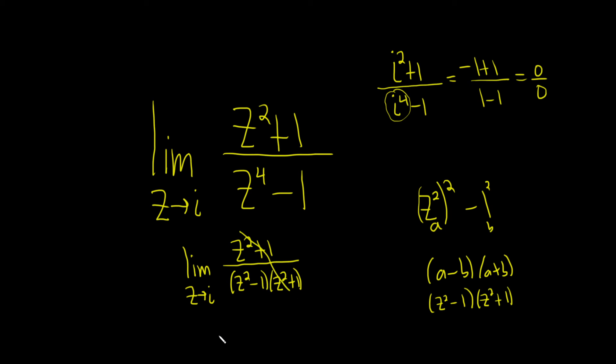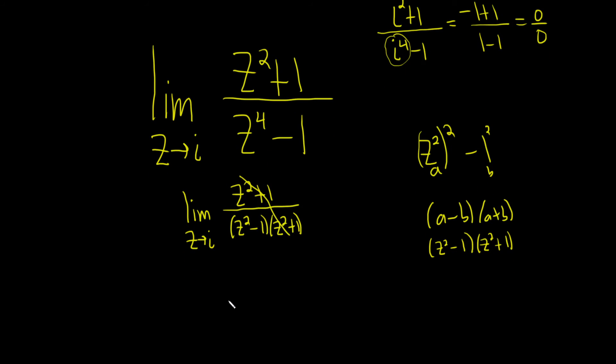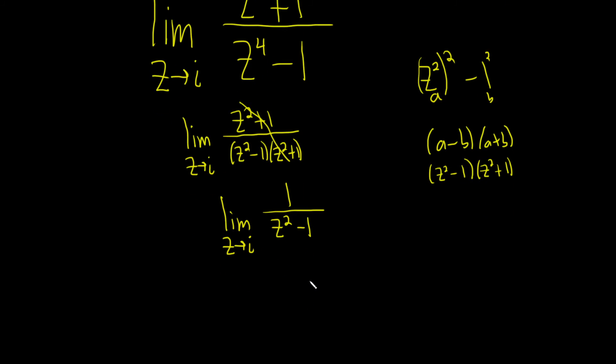And now these cancel. So this is equal to the limit as z approaches i of 1 over z squared minus 1. And so now we're in a position where we can actually plug in the i and evaluate the limit.